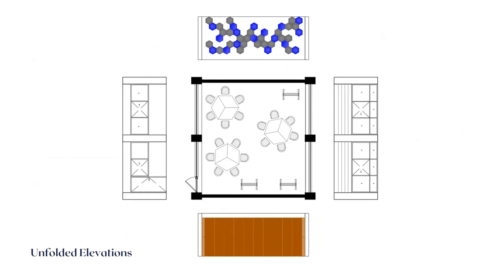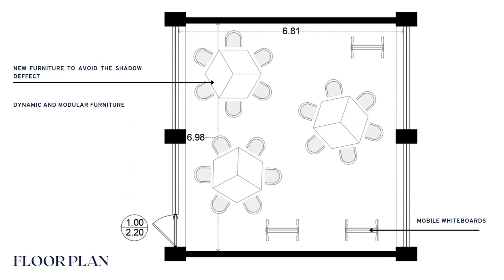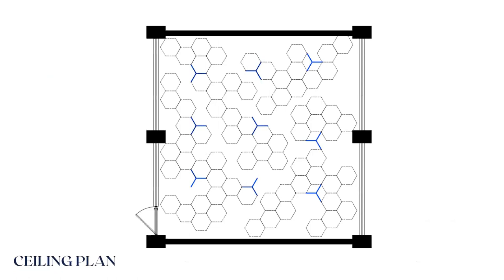We needed to design a new proposal that eliminated the flutter echo and the shadow. You can see an unfolded elevation of the four walls and the floor plan. We designed new furniture to avoid the shadow defect — it is not arranged in definitive rows of five rows of tables and chairs. It is not in rigid order and can have many accommodations as the students wish.